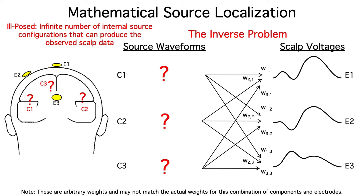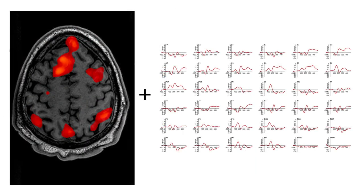Before I discuss mathematical source localization techniques, I'd like to briefly address a question that I'm often asked. Couldn't we just combine fMRI and ERP data to get both spatial and temporal resolution? Unfortunately, it's not that easy.